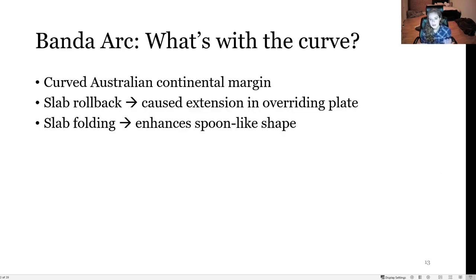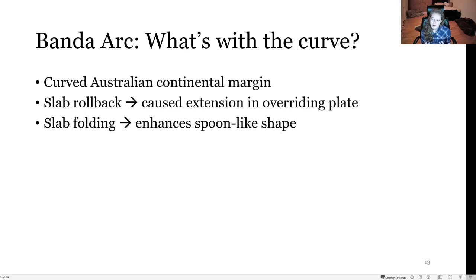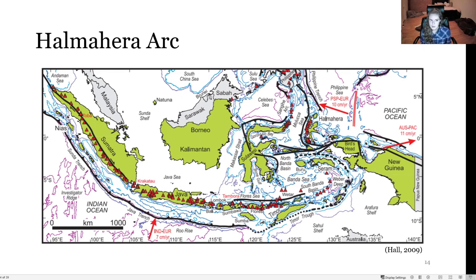To summarize the Banda Arc: it was formed due to a trench molding itself to a curved Australian continental margin. Then slab rollback occurred, which caused extension in the overriding plate. Finally, slab folding due to mantle resistance enhanced its distinctive spoon-like shape. That's the Banda Arc — now we're going to move to an entirely different part of Indonesia and go north to Halmahera.